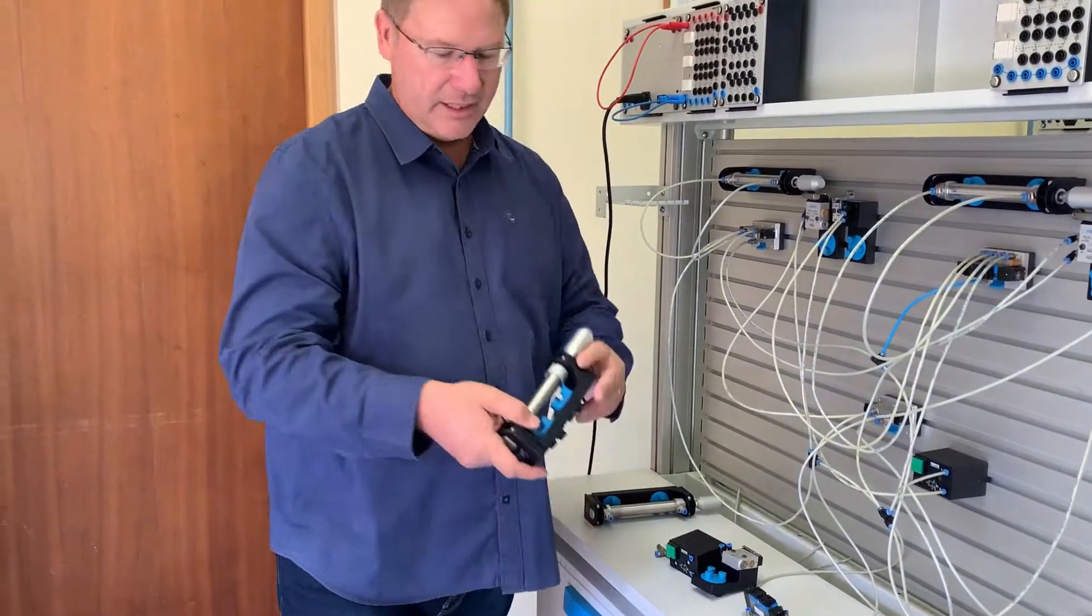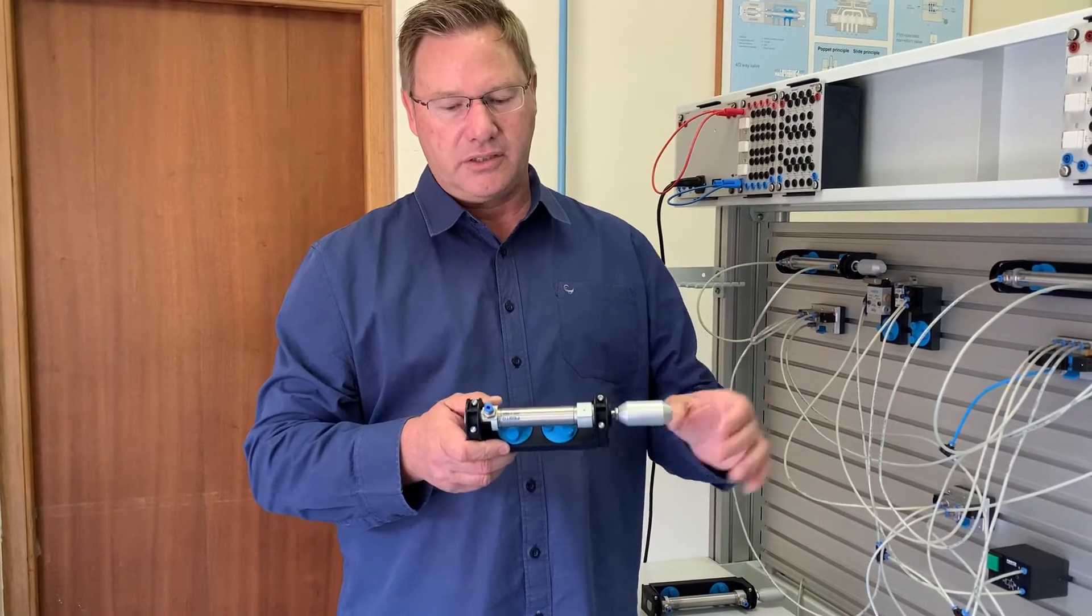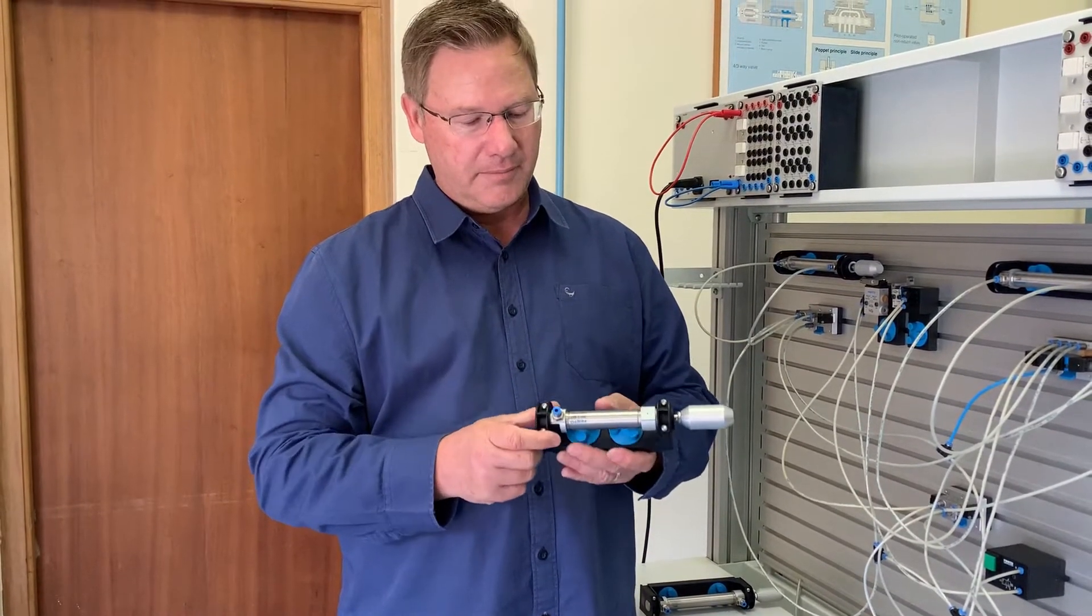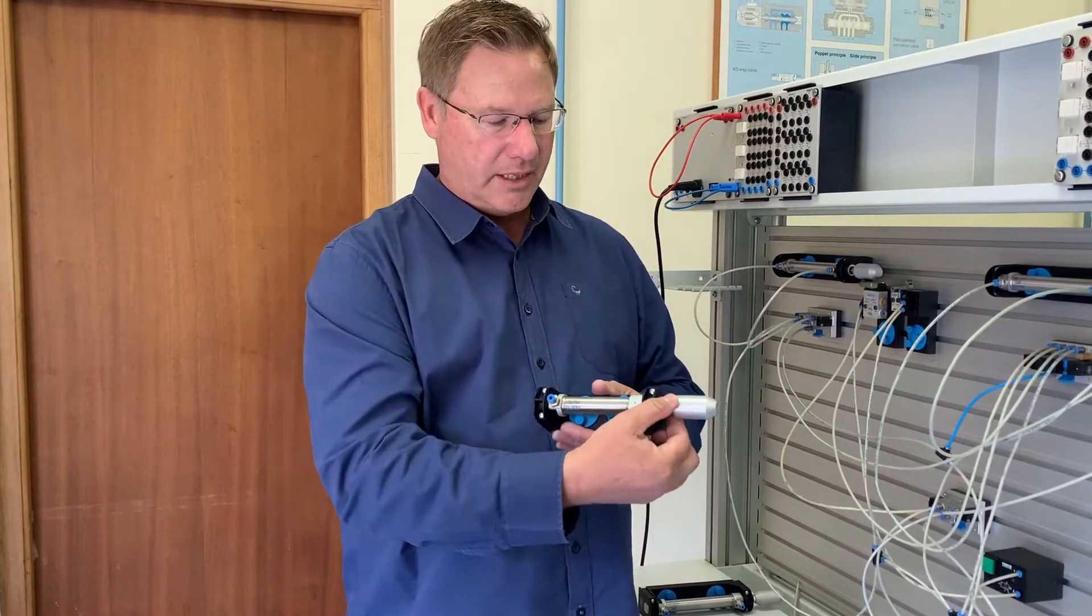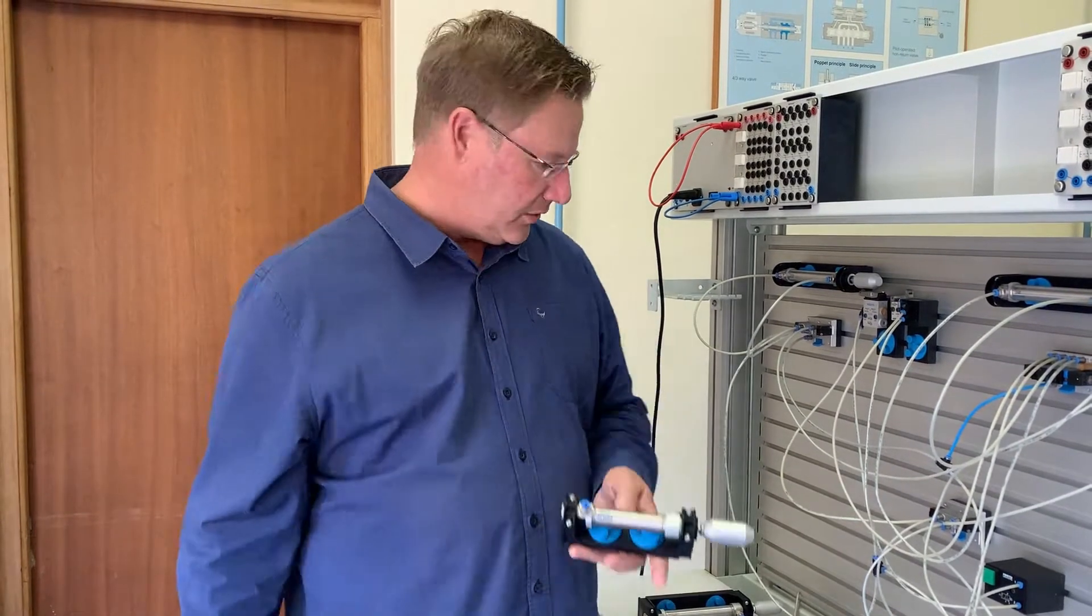Here we have a single acting cylinder and it has a spring on the inside which then returns it so you only need one air supply. When you put the air supply on there it will push it out and when you release the air supply and switch it off then it will return again.